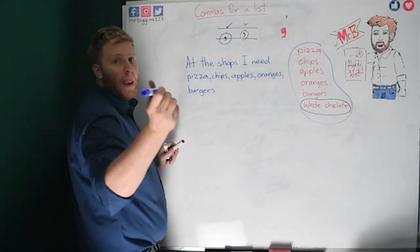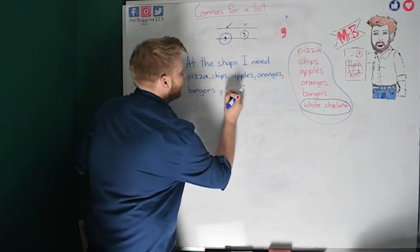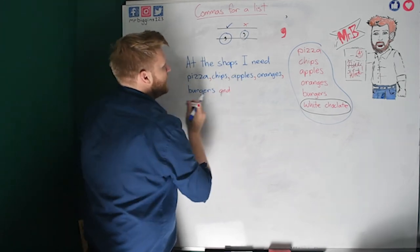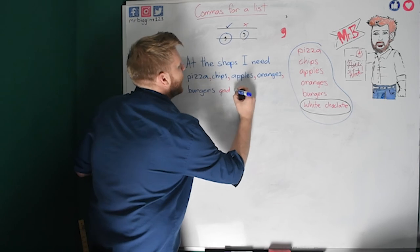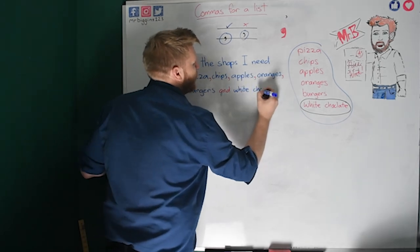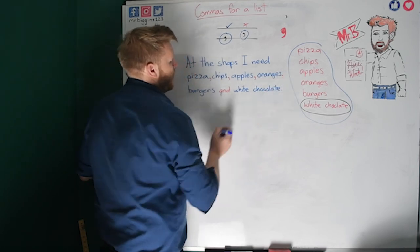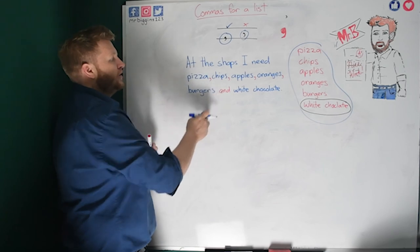Got some burgers. Burgers. Now I'm on to my last one, so I use the word and instead of a comma. And I've got white chocolate. So there's no comma between white and chocolate. Chocolate. And that is how your list should look.